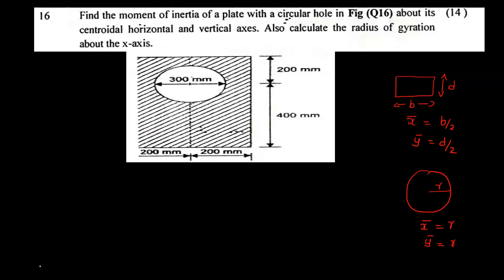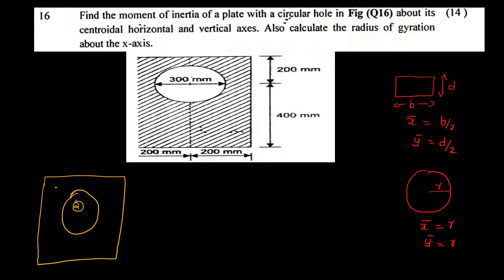We have a rectangle here, with a circle to be removed from it. The first portion is the rectangle, and the second portion is the circle — it is subtracted (minus). The height dimension is about 150 mm for the radius. The center-to-center distance is 200 mm, and the total length is 400 mm.